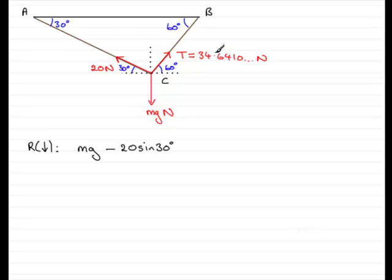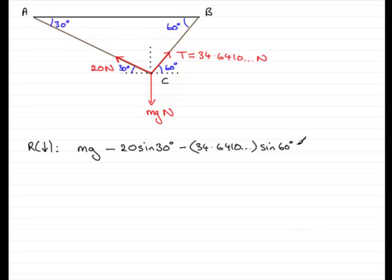Now we'll move over to the tension in the string BC. How much of that tension — how much of that force acts upwards? Well we've got the 60 degrees here and we're excluding the 60 degrees in this section here. So if you exclude it then that component is the sine of that angle. So we would have minus 34.6410 multiplied by the sine of 60 degrees. So this is our resultant force that acts in a downward direction.